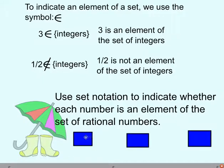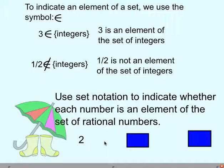Let's see about these numbers. We need to use set notation to indicate whether each number is an element of the set of rational numbers. Remember, rational numbers are the ones that can be shown as fractions — all of our counting numbers, whole numbers, integers — because those can be shown as fractions, plus our fractions and decimal numbers. The only ones we can't include are decimal numbers that don't repeat and go on forever, things like pi or the square root of 2. So, 2 is a whole number integer, and we can show it as 2 over 1, which makes it rational. So 2 is an element of the rational numbers.